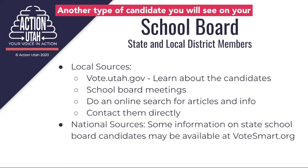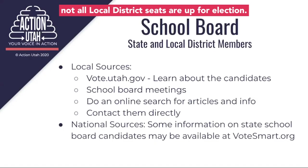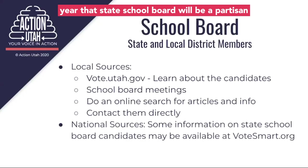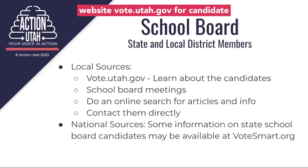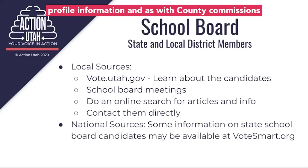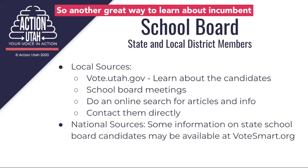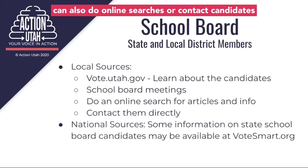Another type of candidate you will see on your ballot is school board candidates, both for the state and local district school boards. Not all local district seats are up for election, so not all voters will have local district candidates to vote on. It's worth noting that this is the first year that state school board will be a partisan race in Utah. You can check the state elections website vote.utah.gov for candidate profile information. As with county commissions and councils, school boards also meet regularly, so another great way to learn about incumbent candidates is to attend these meetings. You can also do online searches or contact candidates directly for more information.